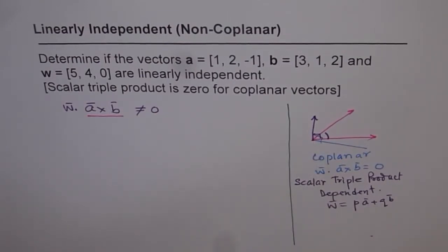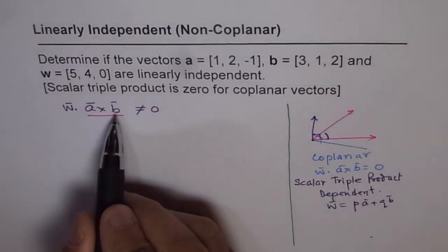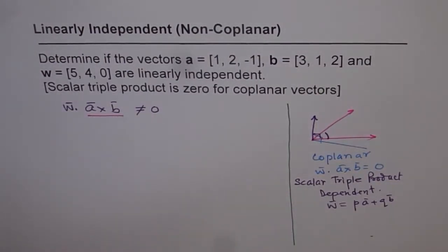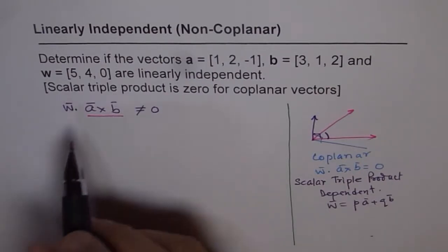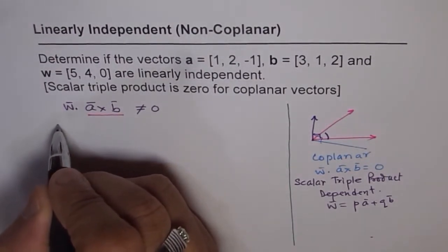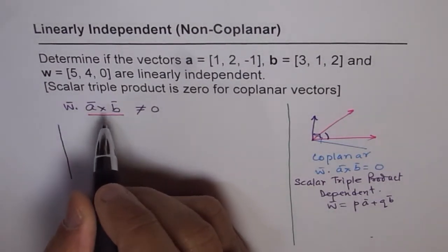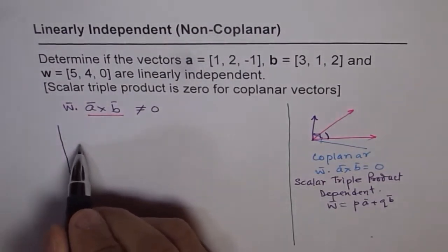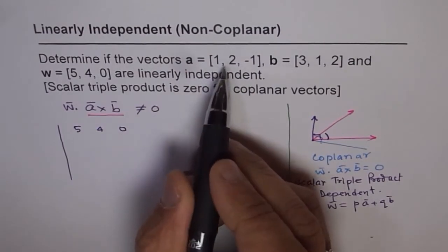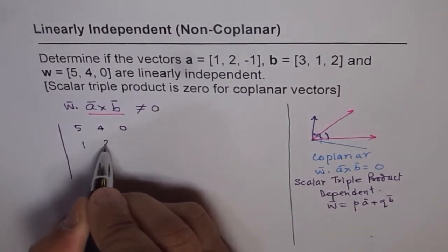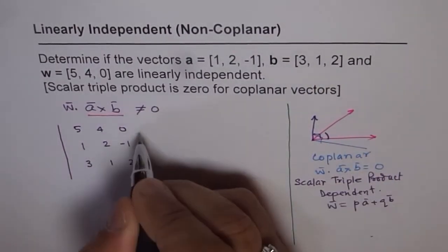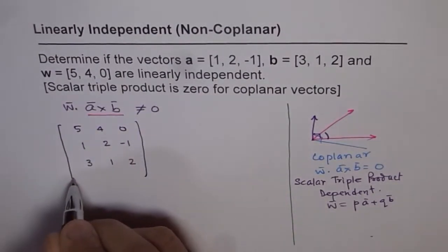To find the scalar triple product, one way is to first find A cross B and then take the dot product with W. I have also introduced the matrix method. We write the three vectors as rows of a matrix: W = (5, 4, 0) in the first row, then A = (1, 2, -1), and B = (3, 1, 2). That is the matrix for computing W dot (A cross B).